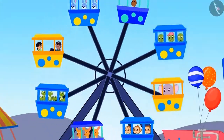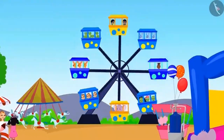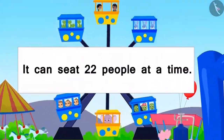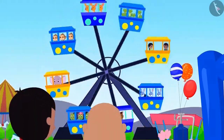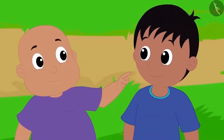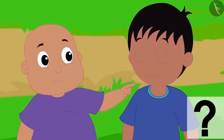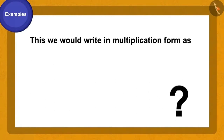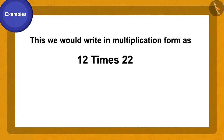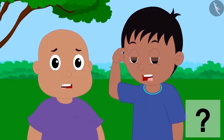Everyone has gone to the fair, which has a variety of entertainment. There is a huge ferris wheel that can seat 22 people at a time and it operates 12 times a day. Raju asked Bablu how many people can ride it in a day. We write this as 12 times 22. But we have only learned to multiply a two-digit number by a single-digit number — how do we calculate this now?